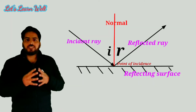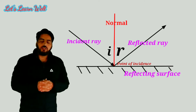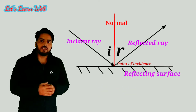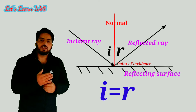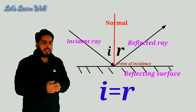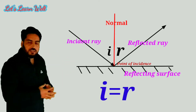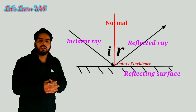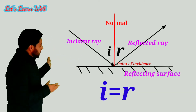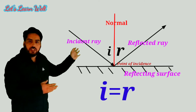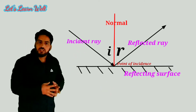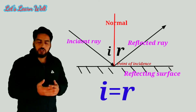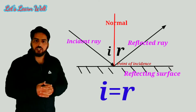Now let's see what the statement of the second law of reflection is. The second law of reflection states that the angle of incidence is always equal to the angle of reflection. That means if the angle of incidence is 30 degrees, the angle of reflection will also be 30 degrees. If the angle of incidence is 60 degrees, the angle of reflection will also be 60 degrees.